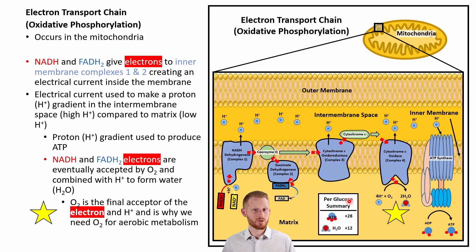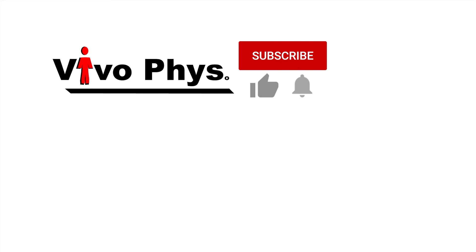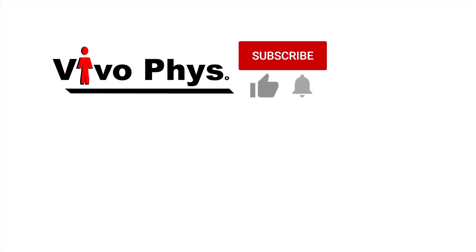From one glucose molecule, we end up with 28 ATP molecules from the entire aerobic process, and also 12 water molecules. If you haven't already, check out the glycolysis video to see how glucose is broken down to produce NADHs and FADH2s. Links in the description below cover glycolysis, fat metabolism for producing NADHs and FADH2s, and how bioenergetic pathways are modulated to speed up or slow down.